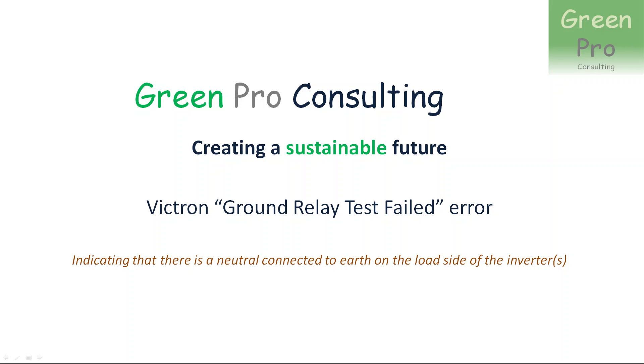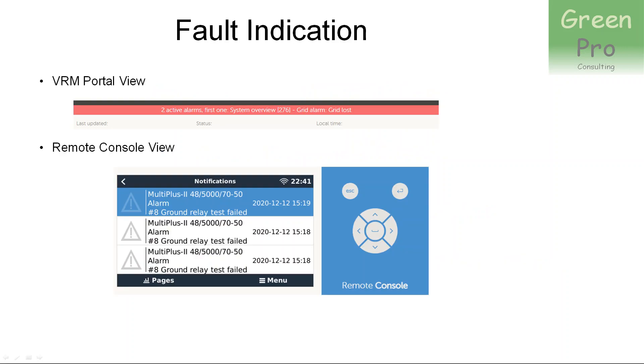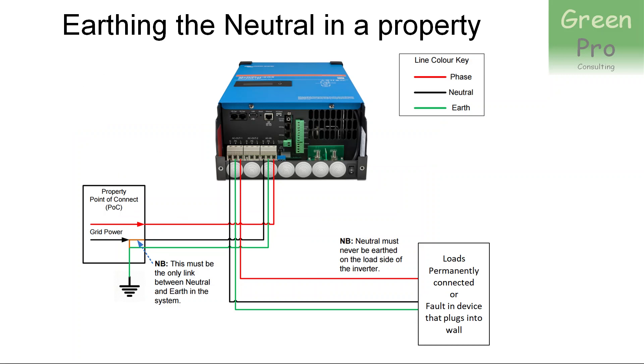And what you do then is you actually go to the remote console and you start looking for fault notifications. And if you see that ground relay test failed errors is indicated here, then you know that you've encountered that problem. And for most people, even technical people involved with Victron installations, they then don't have a clue what is busy happening. And then they probably start googling the problem and hopefully find an answer to the problem. And that's what I'm trying to do here. Right, so let's talk a bit about the background.